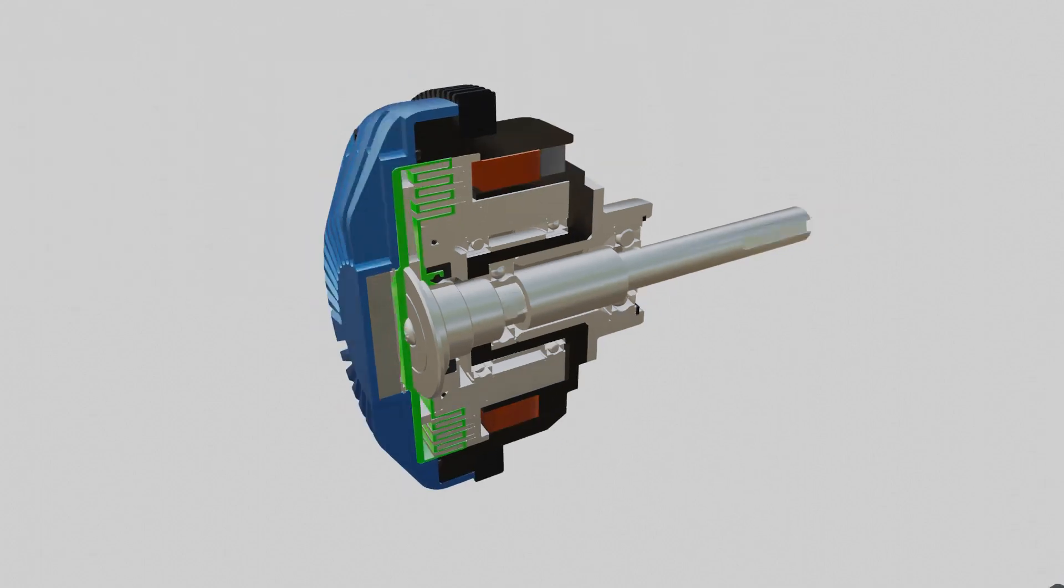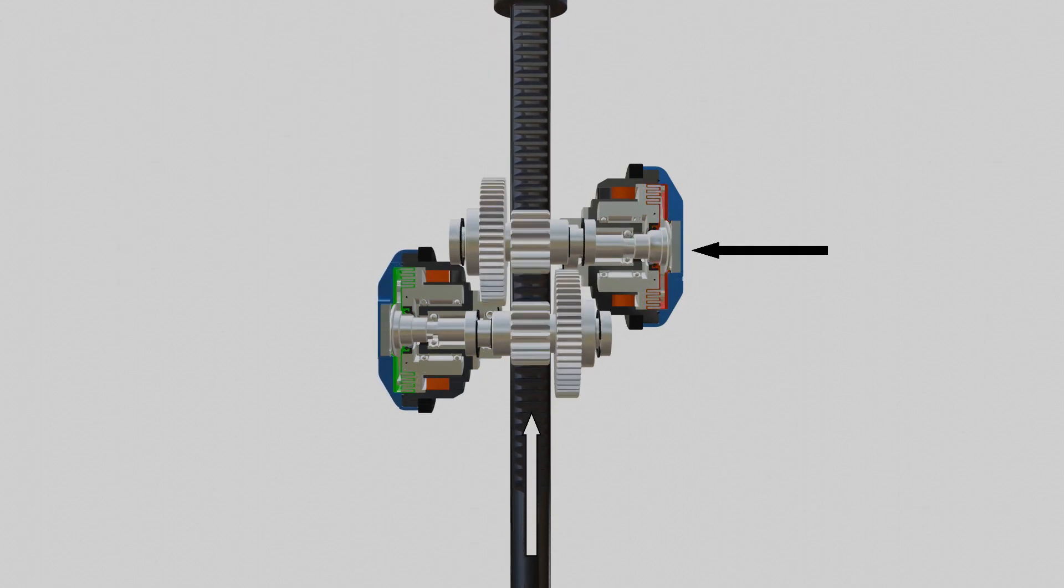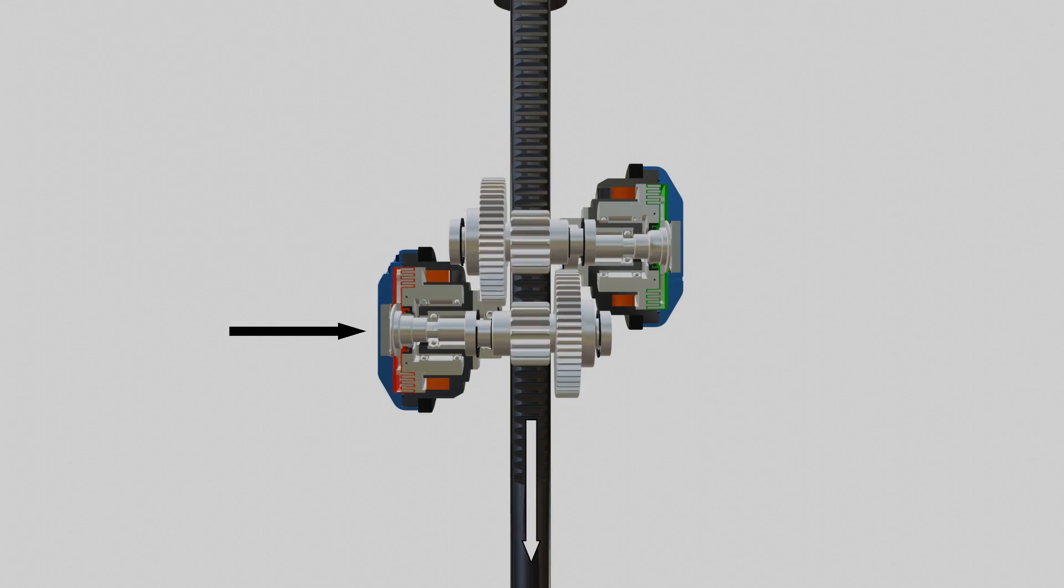We can now see how the whole assembly works. When the electromagnetic coil at the right clutch is activated, the right clutch engages, pushing the rod up. The opposite happens when the left clutch is engaged.